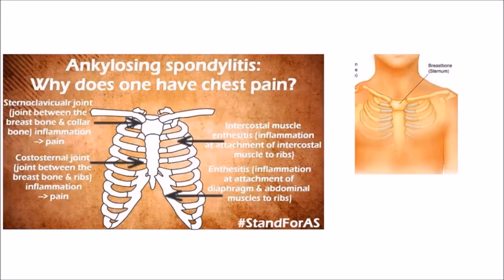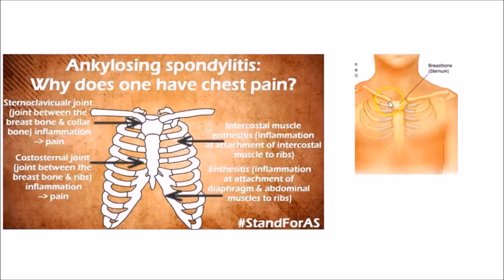The joints involved in the chest because of Ankylosing Spondylitis include the sternocostal joint — that is the joint between the collarbone and the breastbone. The joint inflammation here is generally easily visible in this area as the joint is quite superficial, and it is quite tender to touch as well.